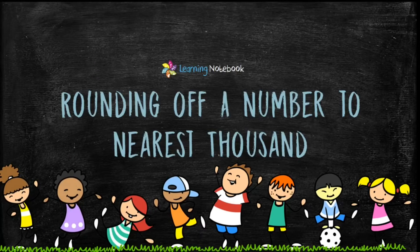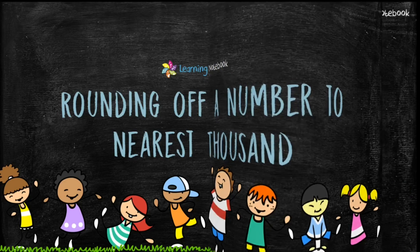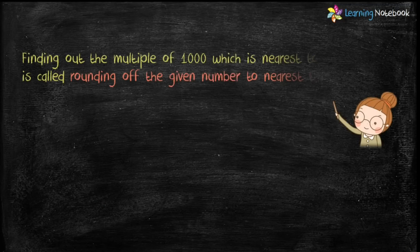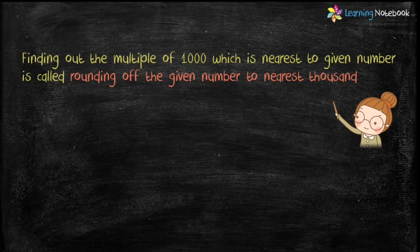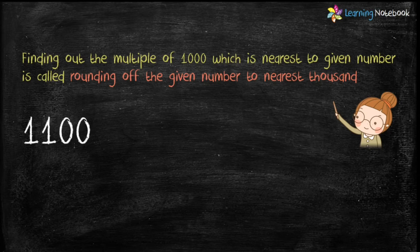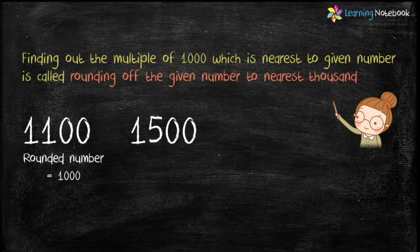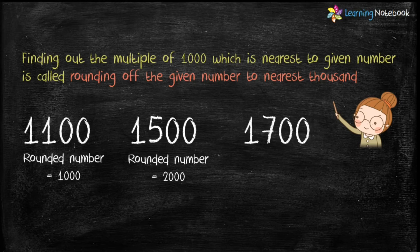Now let's understand rounding off a number to the nearest 1000. Finding out the multiple of 1000 which is nearest to a given number is called rounding off the given number to the nearest 1000. For example, by rounding off 1100 to the nearest 1000 we get 1000, by rounding off 1500 we get 2000, and by rounding off 1700 we again get 2000.